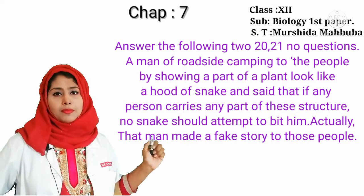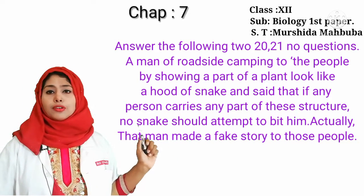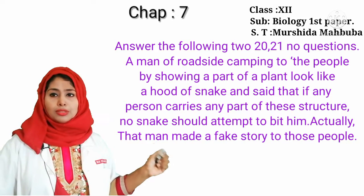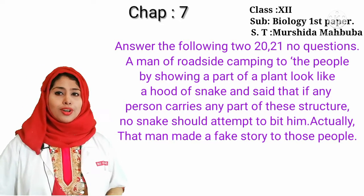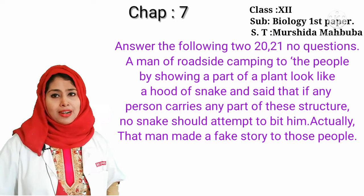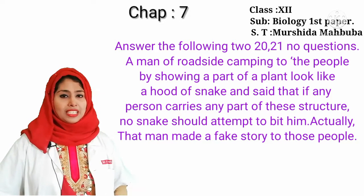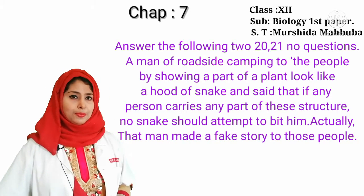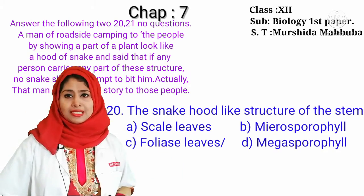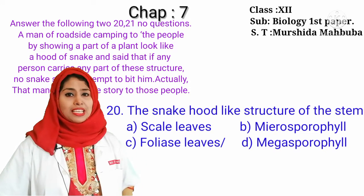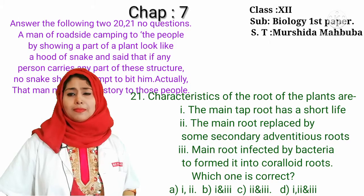Here is a stem — observe the stem and answer the following two questions. A man at a roadside was deceiving people by showing a part of a plant that looked like the hood of a snake, and said that if any person carries any part of this structure, no snake would attempt to bite him. That man was making a fake story. The snake hood-like structure of the stem is the foliage leaves of the Cycas plant.